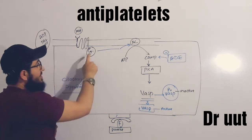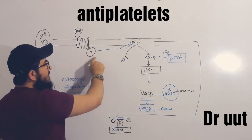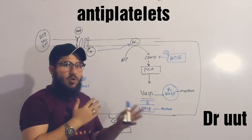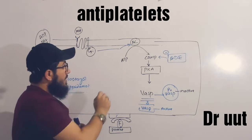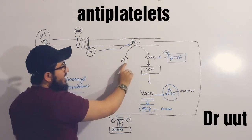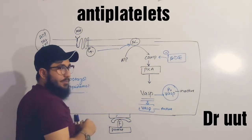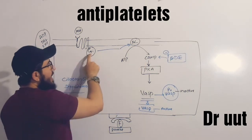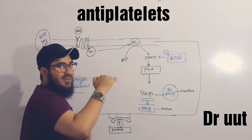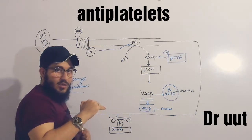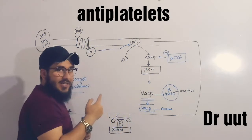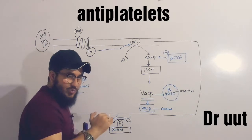Keep in mind this is a Gi-coupled receptor. It will forward the signal to adenylate cyclase. The job of adenylate cyclase is to convert ATP to cyclic AMP. Because it is Gi, what happens is that the conversion of ATP into cyclic AMP will be reduced. Due to this reduction, protein kinase A activation will also be reduced.